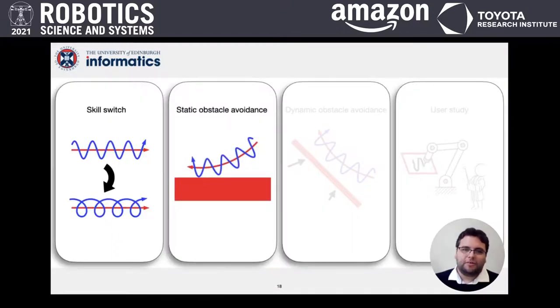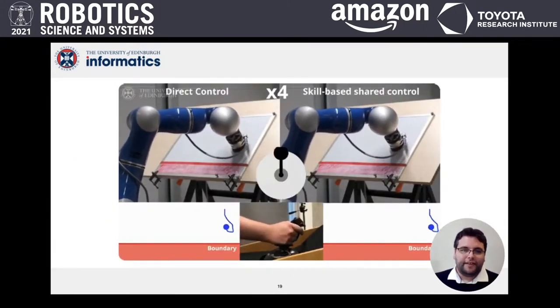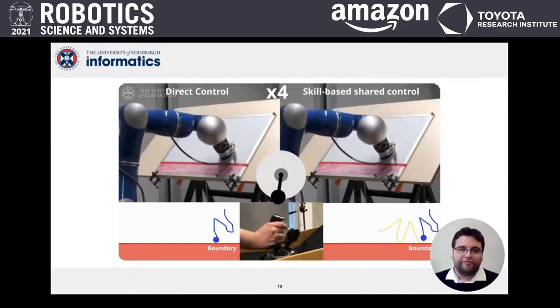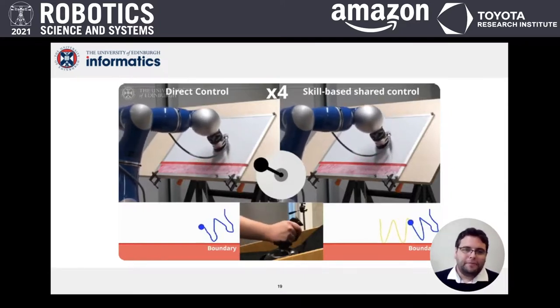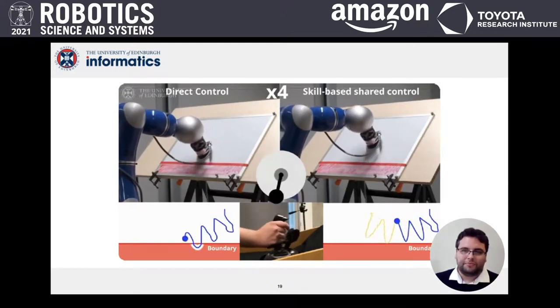Next, we look at a static obstacle avoidance experiment. We recorded interface signals under direct control, where the operator inadvertently leads the robot into constraint violation. When played back under shared control, the motion adapts to the constraint whilst maintaining the skill.